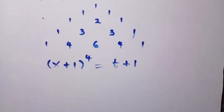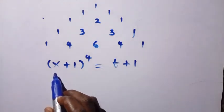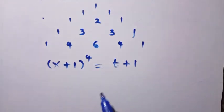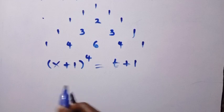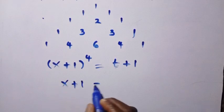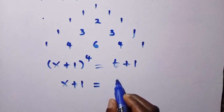After getting this, we make x the subject of the formula. This is to the power of 4, so we take the fourth root of both sides. Taking the fourth root, we have x + 1 equals...